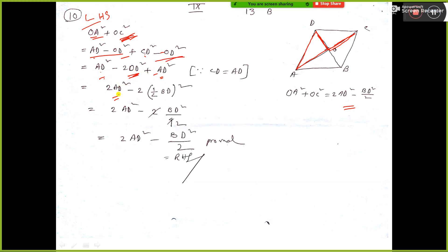AD plus AD, that is 2AD square plus 2 into OD. OD means half BD whole square.